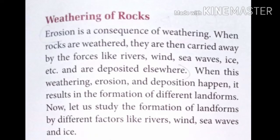Erosion is a consequence of weathering — erosion is a result of weathering. When rocks are broken down into small pieces, they are then carried away by forces like rivers, winds, sea waves, ice, etc., and deposited elsewhere. When weathering, erosion, and deposition happen, it results in the formation of different landforms.